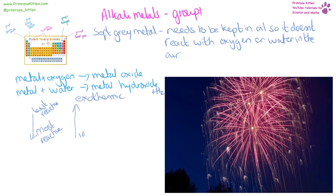Things at the bottom of group one are going to have a lower melting and boiling point, and higher melting and boiling points are at the top. Alkali metals want to lose an electron, and the ones at the bottom are most reactive because there is more shielding between the electron they want to lose and the positive nucleus in the middle.